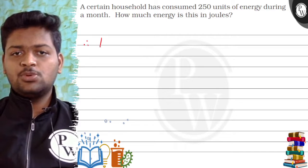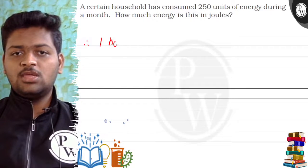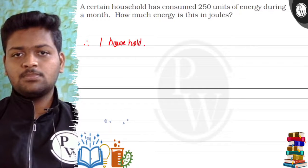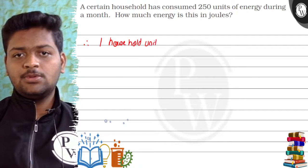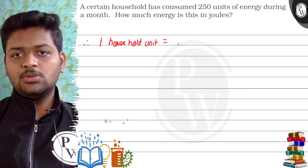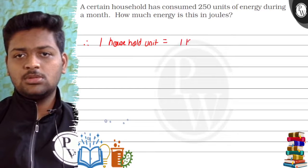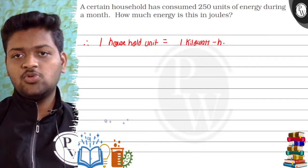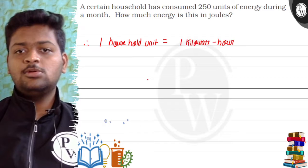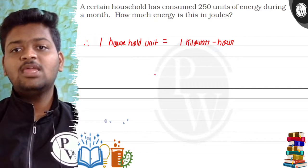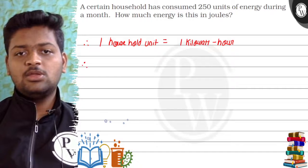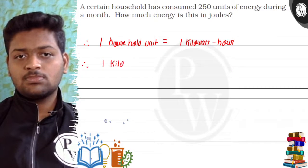Okay, so first of all, we must know that one household unit is equal to one kilowatt hour.